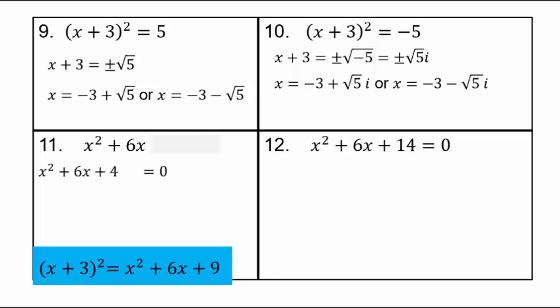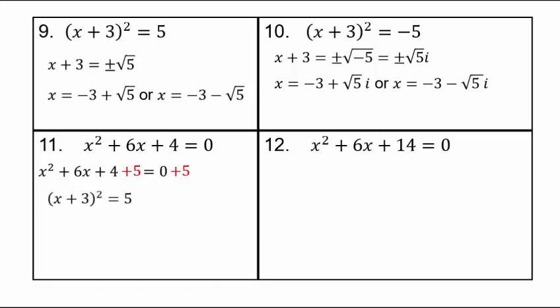Our original problem has x² + 6x + 4. We want +9 to match (x + 3)². Since it's an equation, we can add 5 to both sides. Adding 5 transforms it so the left side becomes x² + 6x + 9 = (x + 3)², exactly like problem 9. This technique uses what we already know to solve problems that couldn't be solved before, such as when we can't factor x² + 6x + 4.